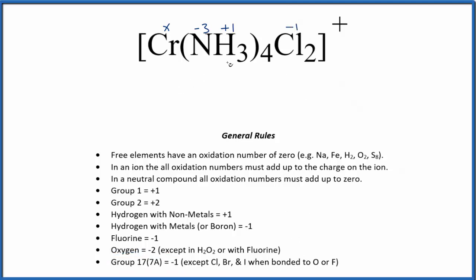Now we just set up a mathematical expression. X plus four times zero is zero, and then we have two times negative one. And we said all of that equals the charge on the ion, that's plus one. So X minus two equals one. Add two to both sides. X equals three.